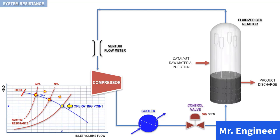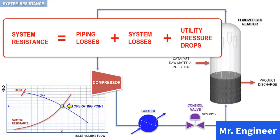Recall, system resistance can be defined as the sum of piping losses, system losses, and utility pressure drops. In our case, the last term is not applicable. Therefore, for our process, system resistance comprises only of piping and system losses. Let's have a closer look at each term.